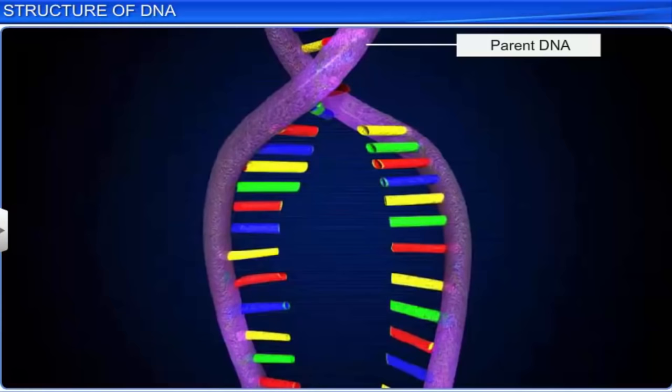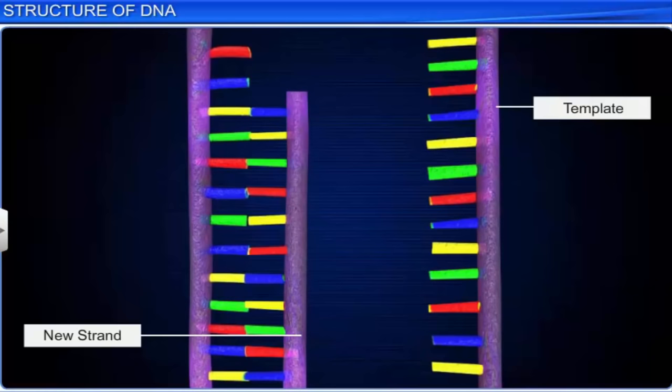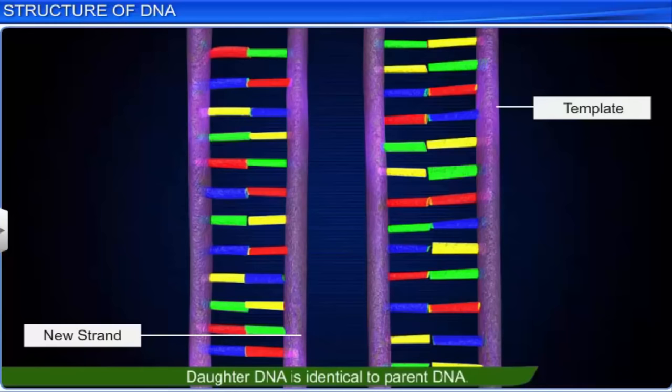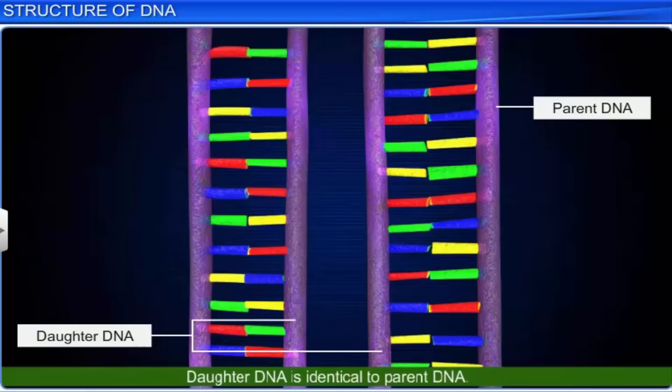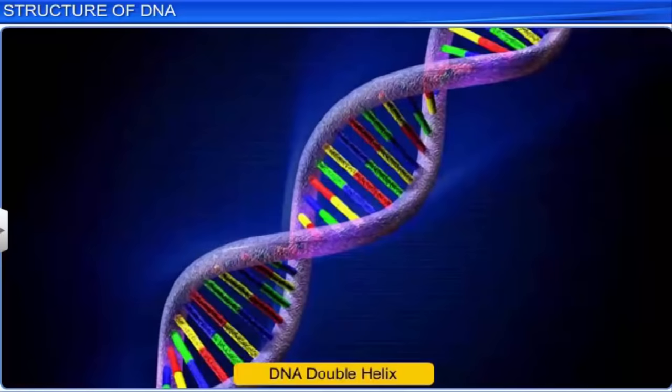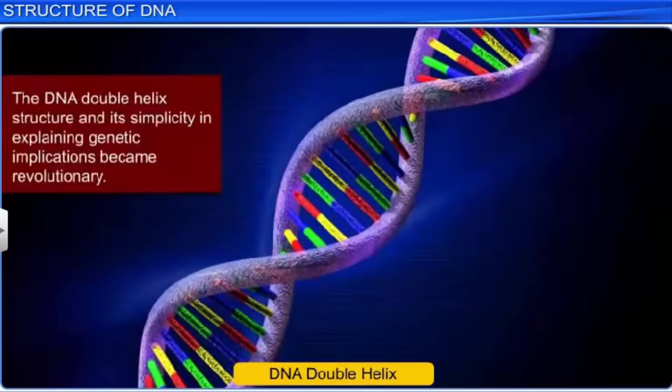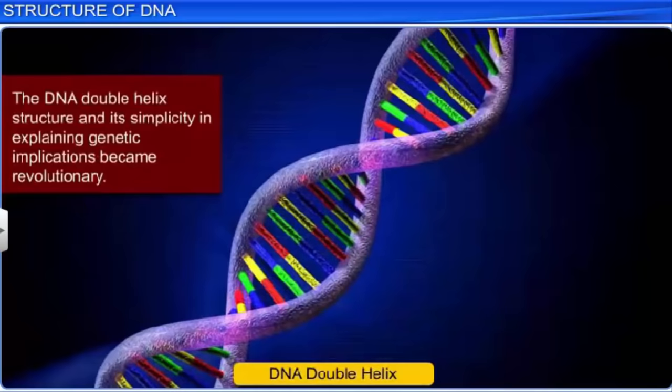Moreover, when two strands of a parental DNA separate, each serves as a template for synthesis of a new daughter strand because of complementary base pairing. The two double-stranded daughter DNA molecules generated are identical to the parent DNA molecule. Thus, these discoveries provided a clearer picture of the genetic implications of the DNA structure, and soon the DNA double helix structure and its simplicity in explaining genetic implications became revolutionary.